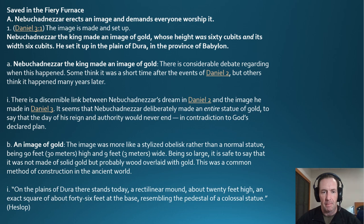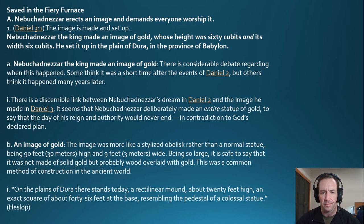Nebuchadnezzar the king made an image of gold whose height was 60 cubits and its width was 6 cubits, and he set it up in the plain of Dura in the province of Babylon. There is considerable debate regarding when this happened — some think it's a short time after Daniel chapter 2, but others think it happened many years later.